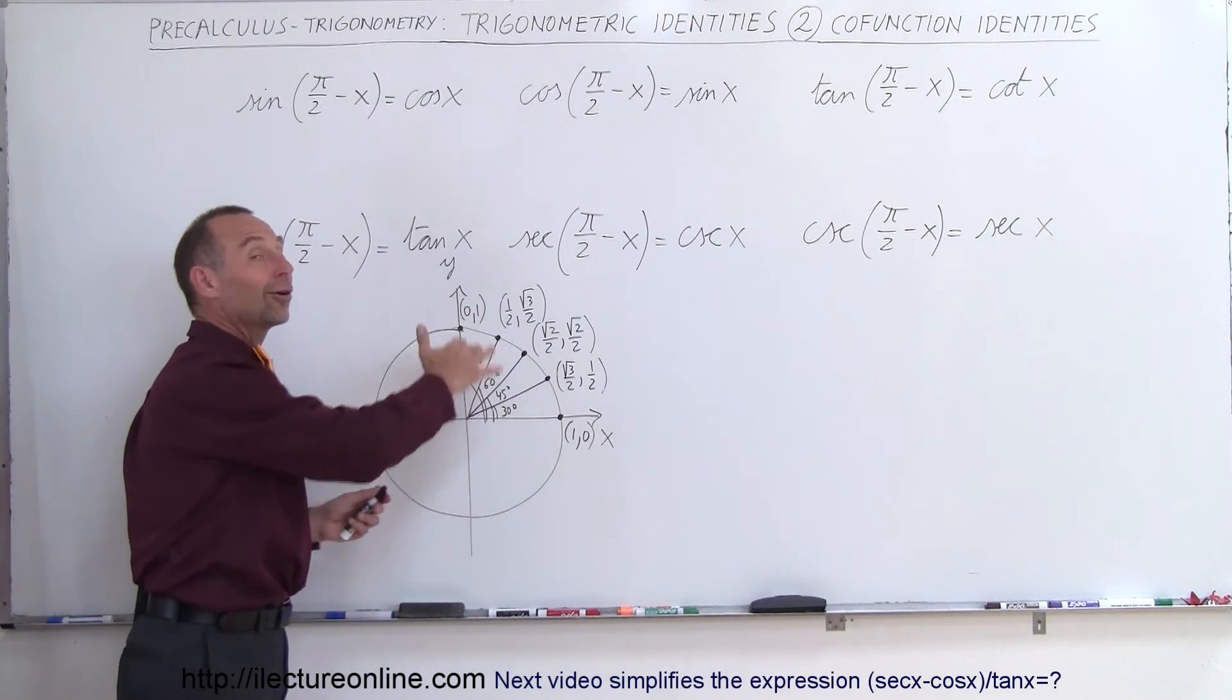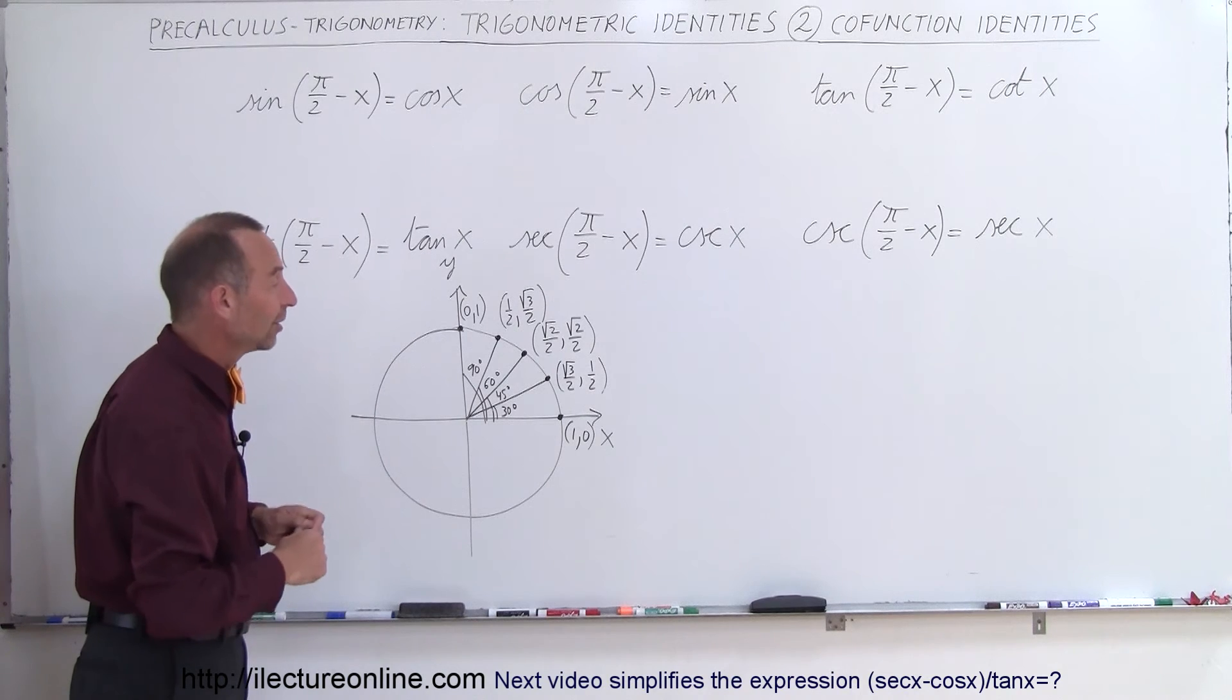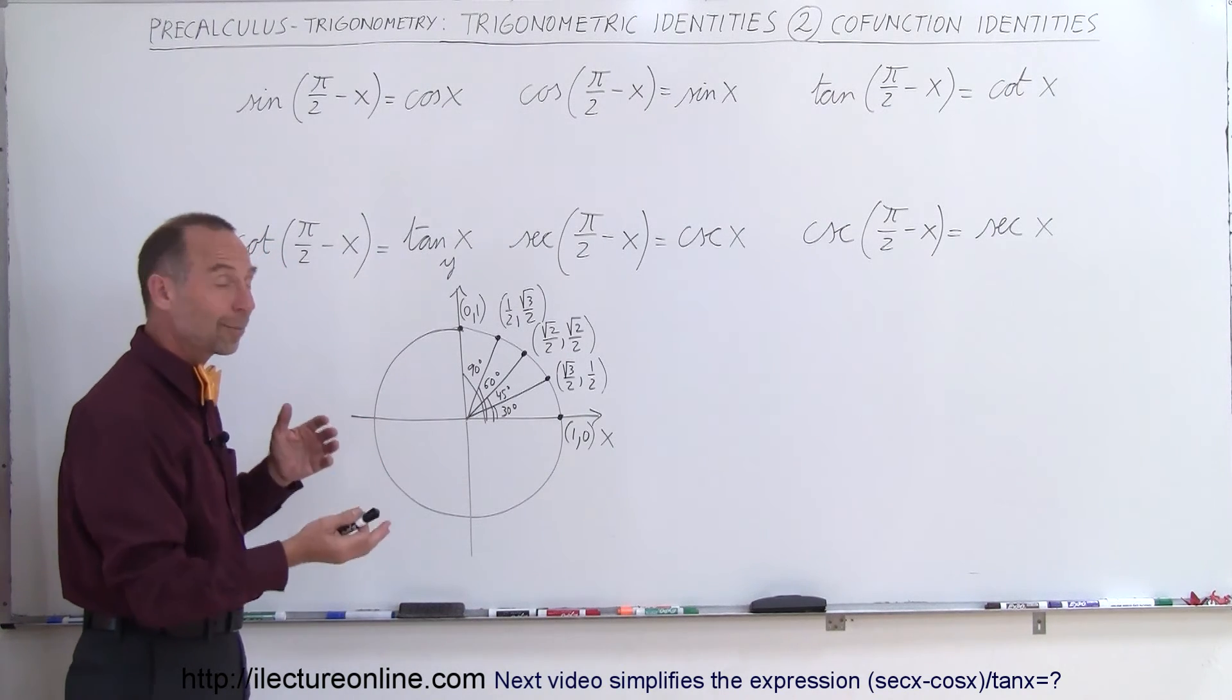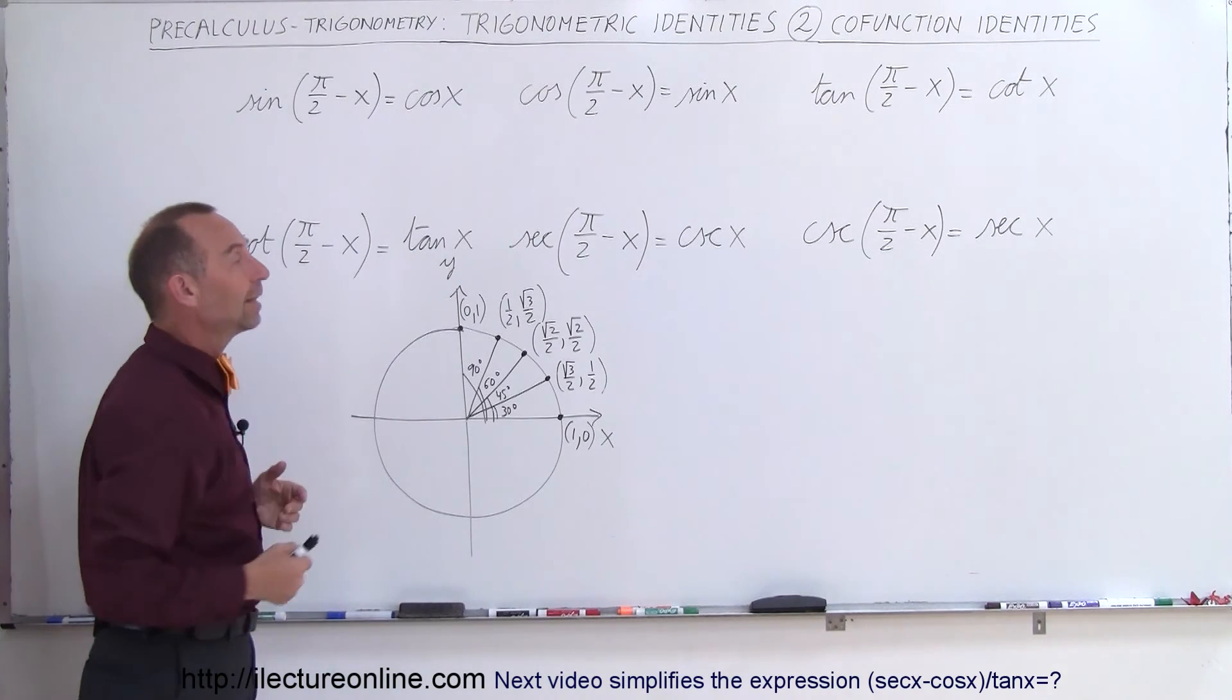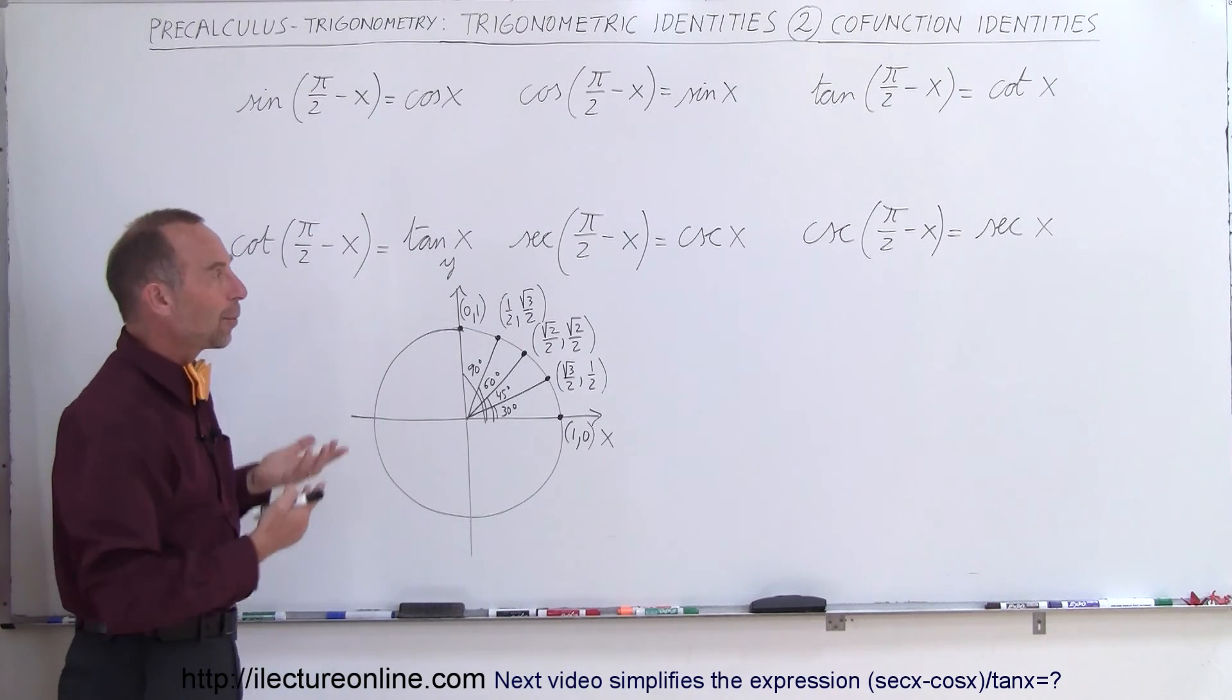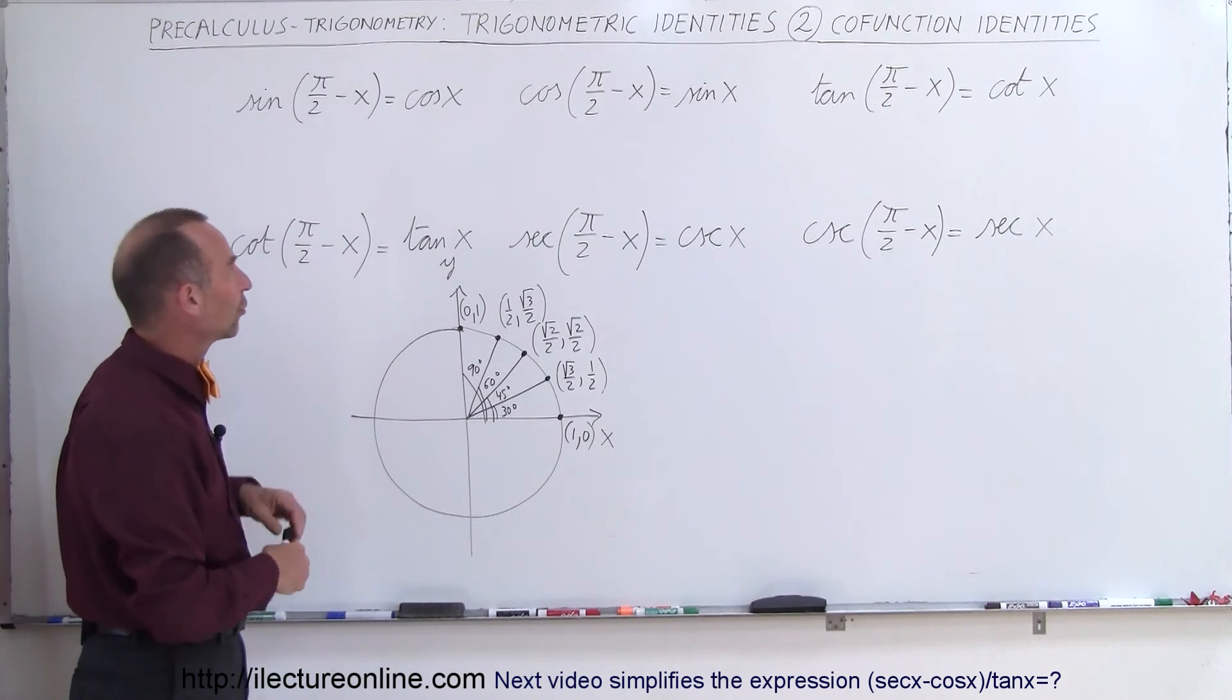You might have already noticed that. It's hard to miss when you first start seeing the trigonometric identities and you start talking about the sine and the cosine for various angles, but that's how we put it into a nice relationship, and we call that, therefore, the co-functions.